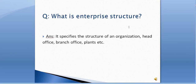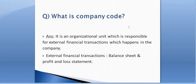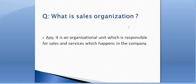What is a company code? Company code is an organization unit which is responsible for external financial transactions which happen in the company. External financial transactions are the balance sheet and profit and loss statement. What is a sales organization? Sales organization is an organization unit which is responsible for sales and services which happen in the company.